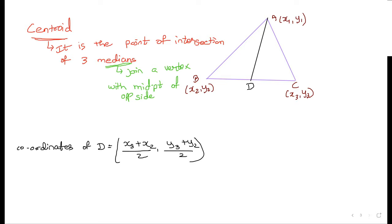If we draw all three medians, then the point of intersection is the centroid. And what is another property of centroid?